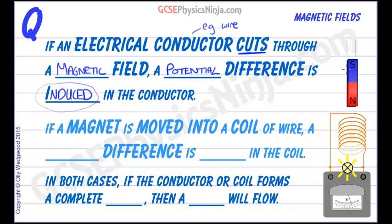If a magnet—here we are, here's a magnet—is moved into a coil of wire, well we've got a similar thing happening. But instead of just one wire, we've got multiple coils of wire here. And so the effect is magnified if we've got lots of coils. So if a magnet is moved into a coil of wire, a potential difference is induced in the coil. It's the same idea.